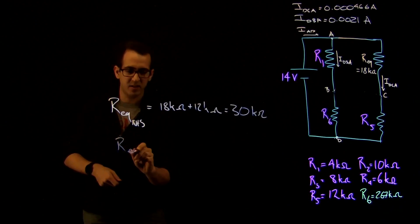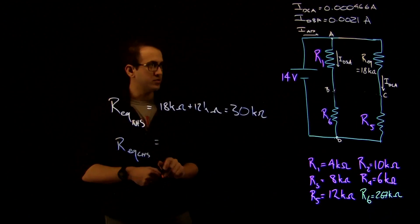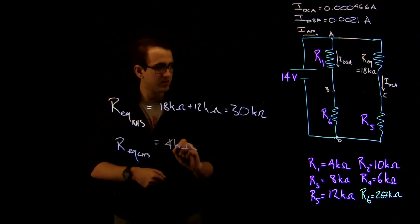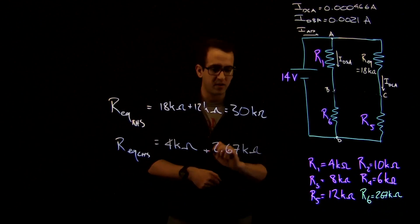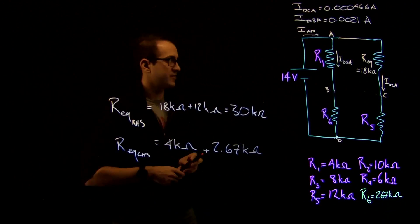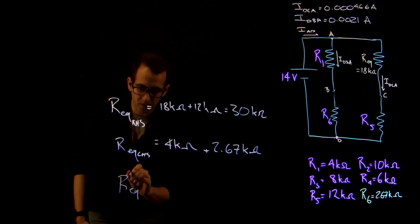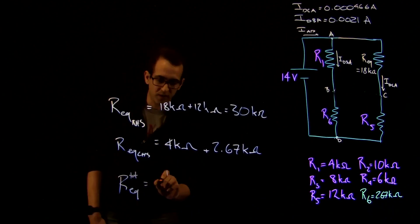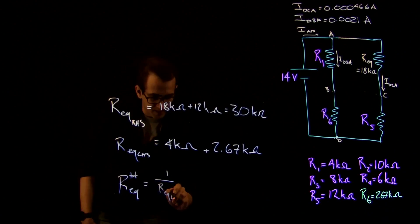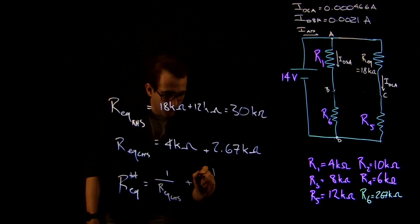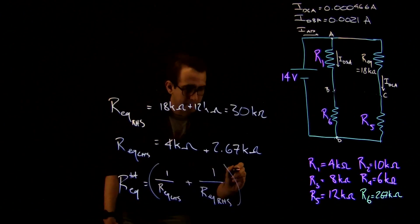Now Req LHS, left-hand side, is just going to be equal to 4 kilohms plus 2.67 kilohms. I've done a little bit of injudicious rounding. And now what we know is that the Req total is going to be 1 over Req LHS plus 1 over Req RHS, all to the power of negative one.